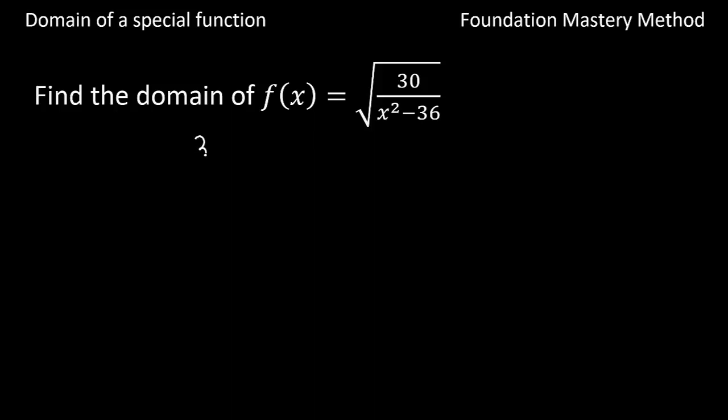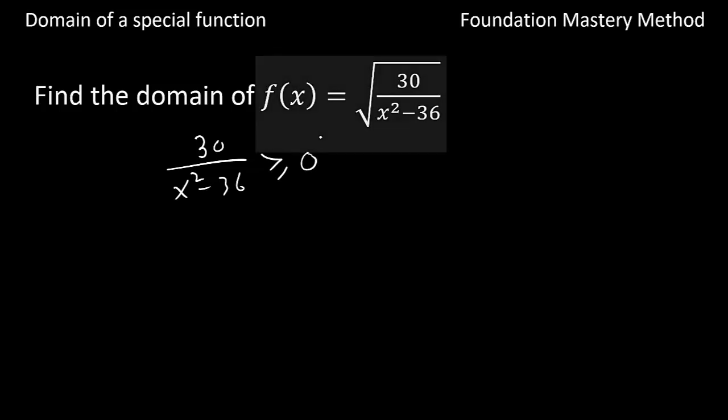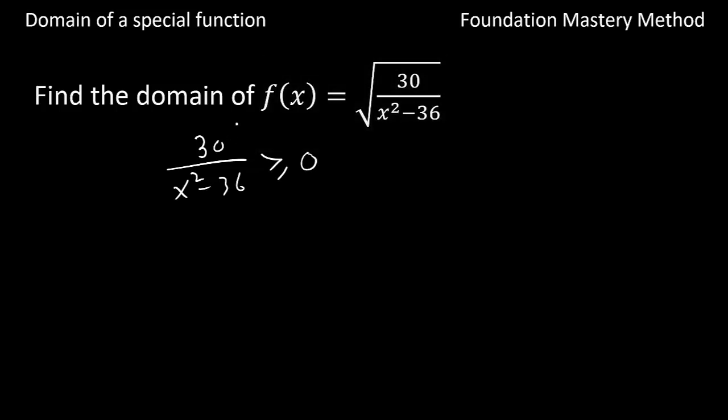30 over x squared minus 36 needs to be greater than or equal to 0. So the numerator is a constant. We do not need anything on that.